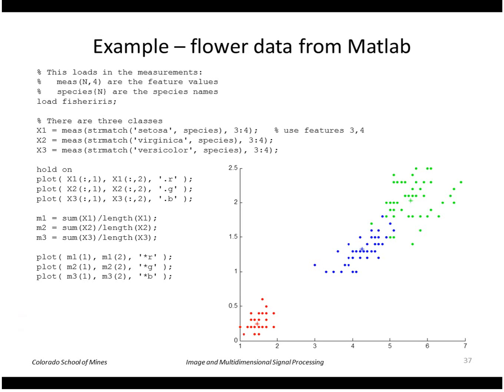As an example, looking again at that flower data from MATLAB: here I'm going to look at features three and four. Remember that flower data actually had four features per observation. Here I'll use the two that are at the end.